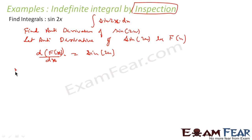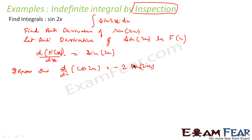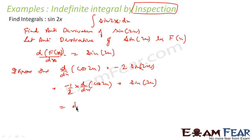I know by memory that d/dx of cos 2x is equal to minus 2 sin 2x. This is by my memory. I know that because I am trying to get sin 2x. The same thing, if I rearrange and try to make sin 2x, I will get minus 1 by 2 into d/dx of cos 2x equals sin 2x. Or I can say that d/dx of minus cos 2x by 2 equals sin 2x.